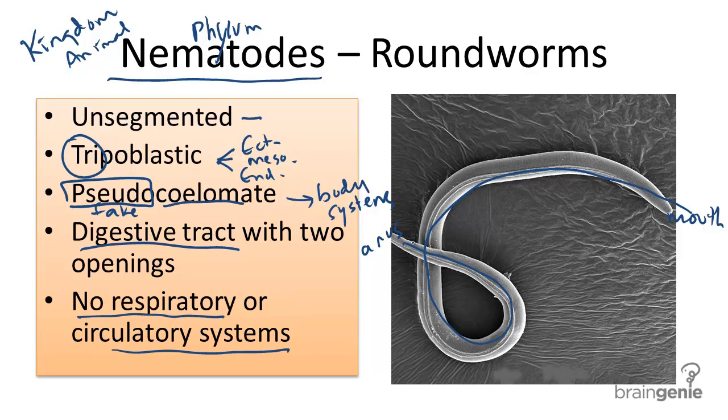Many roundworms are parasitic, meaning that they require a host to survive and reproduce.